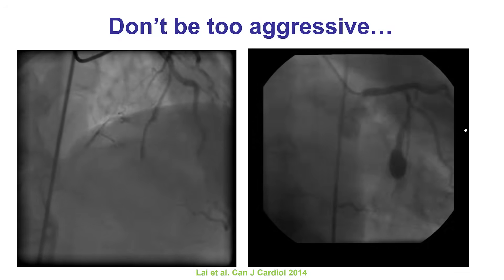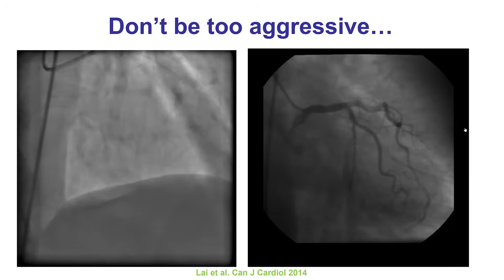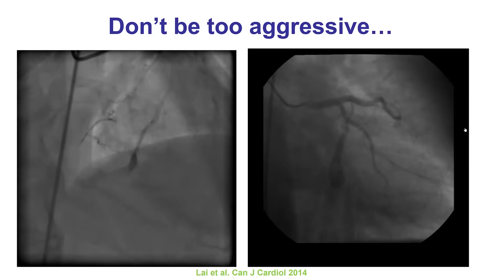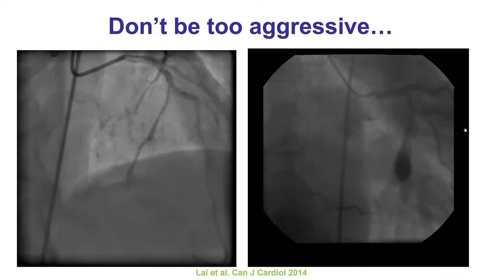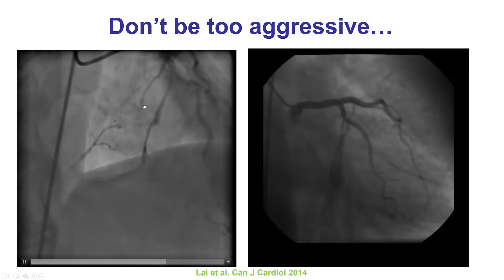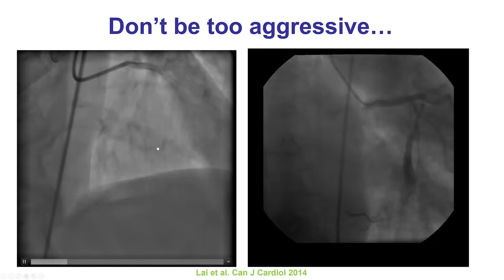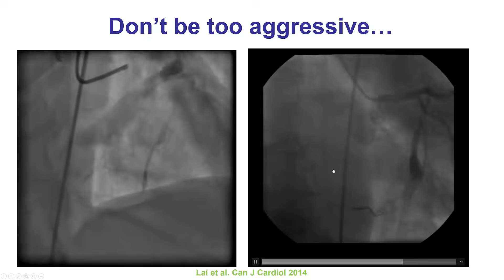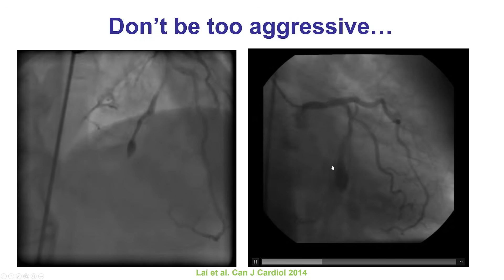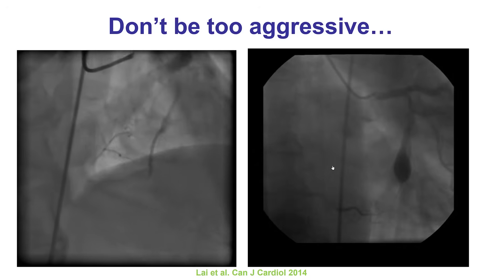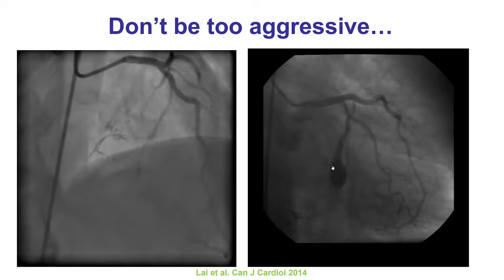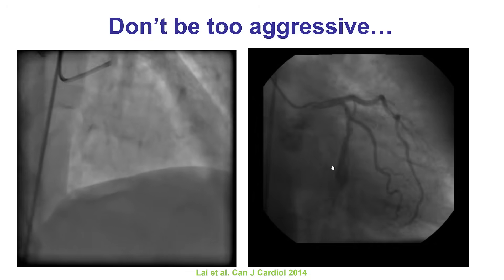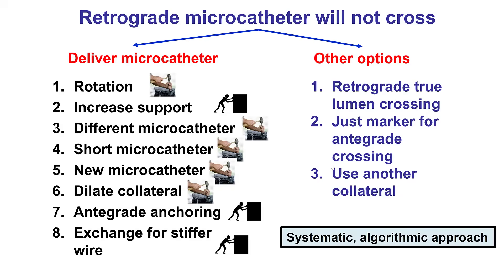Last but not least, sometimes advancing a microcatheter through a collateral is very challenging, and there is a reason for that — for example, the collateral is too small, and very forceful attempts may lead to collateral rupture. We typically say that septal rupture is not a big deal because it's self-limiting, but that's not always the case. This is an example of significant injury to a septal branch leading to a large septal hematoma, which can cause hypotension, decrease filling of the right or left ventricle, and lead to shock and potentially death. In cases where delivering a microcatheter is extremely challenging, it may be best to try a different collateral or go back to antegrade crossing attempts.